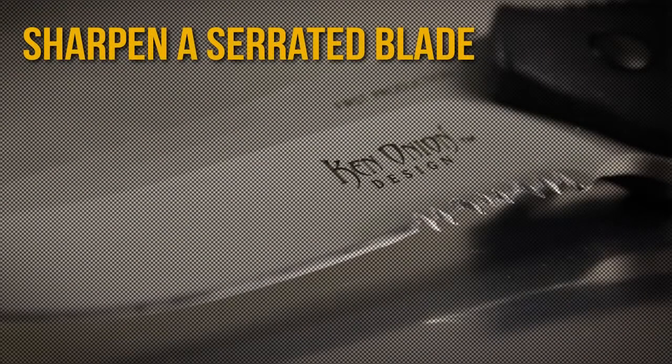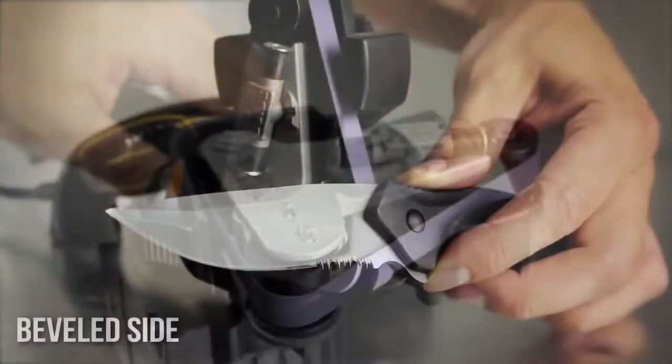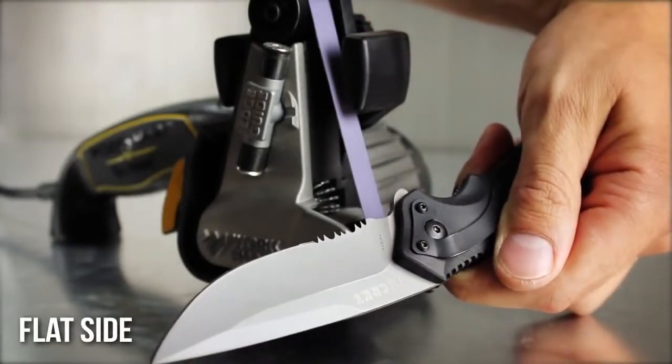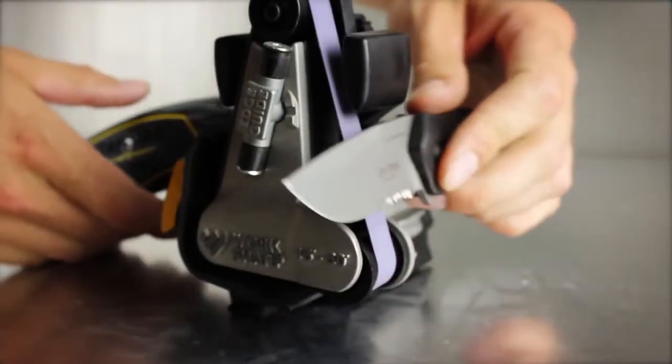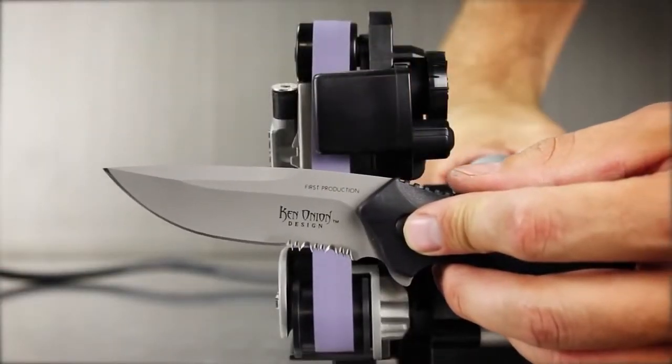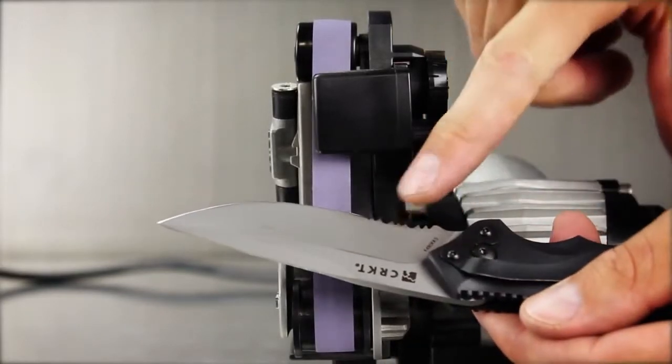To sharpen serrated knives, switch to the finest belt. Do not sharpen the beveled edge. Place the flat side of the blade vertically against the belt. Power on and slowly pull the blade through. Repeat until no burr remains on the flat side.